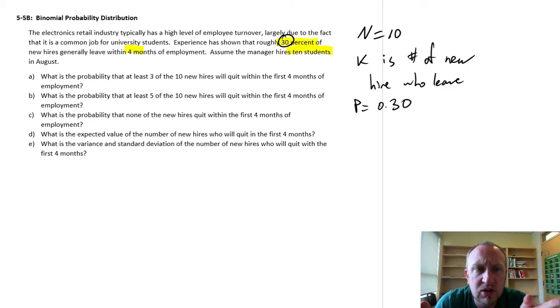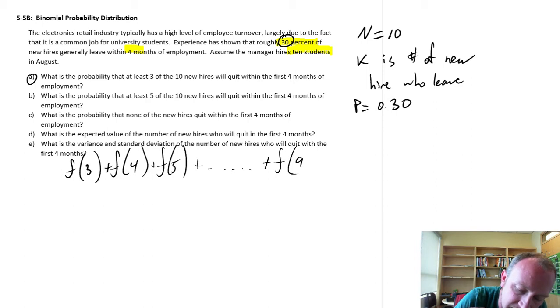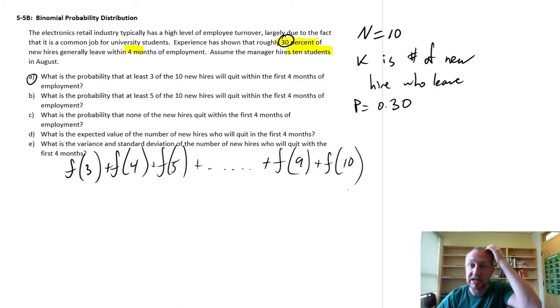Okay, so we have, what's the probability in part A? What's the probability that at least 3 of the new hires will quit within their first 4 months? So, at least. So that means we're going to look at the probability of 3, 4, 5, on and on and on, 9, and 10.